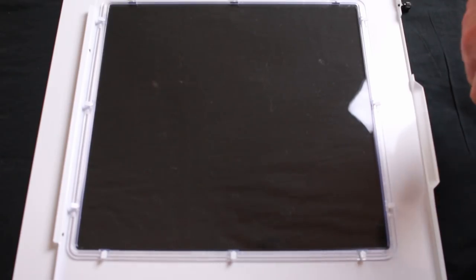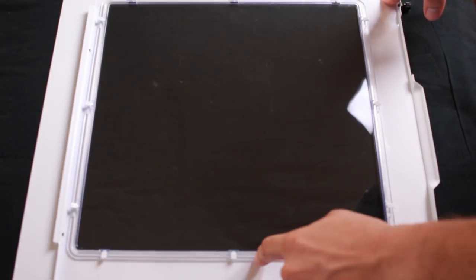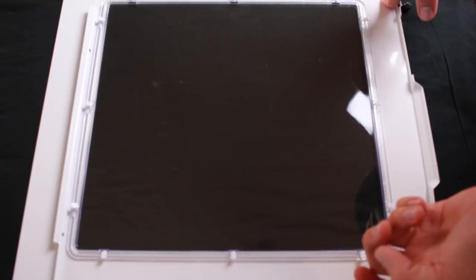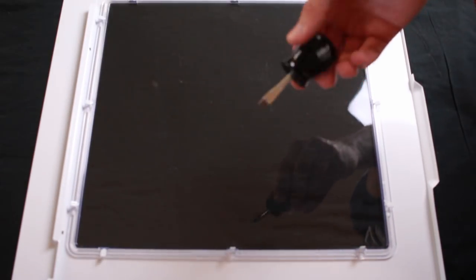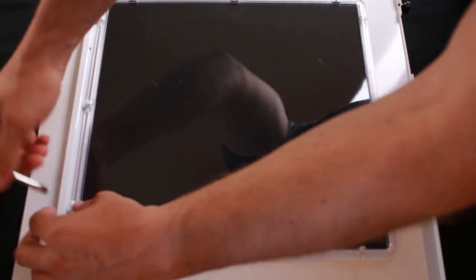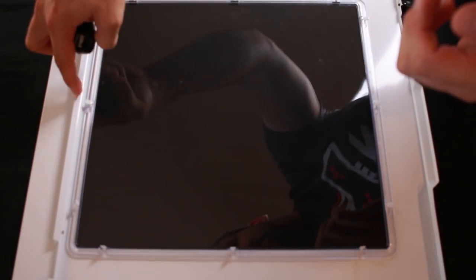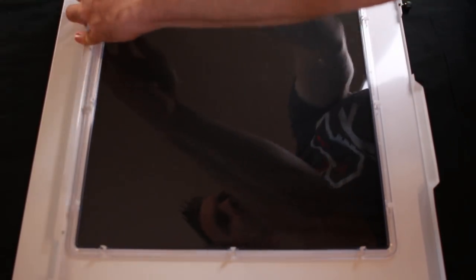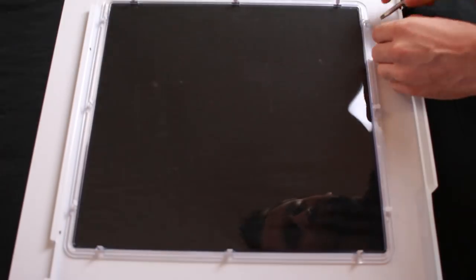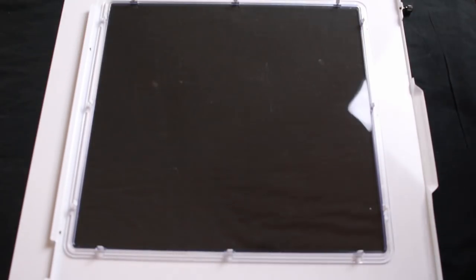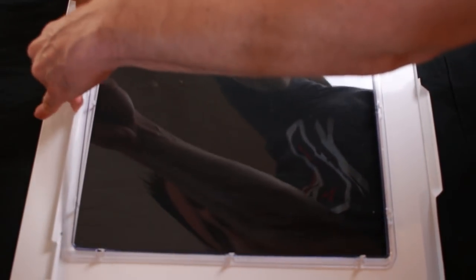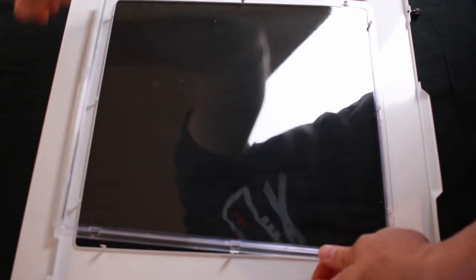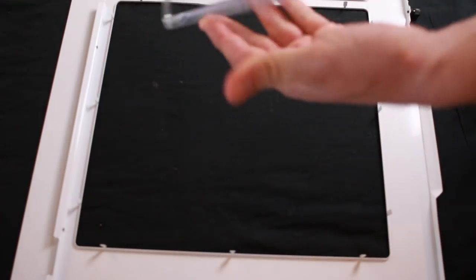So we've got the window off and as you can see from the back of this window, we've got some tabs here along the sides. So we're gonna go ahead and just bend those up and then pull the window out. Actually this might be easier with a flathead screwdriver. Just pull it up. There you go, that's your window.